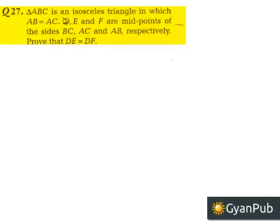Moving on to the 27th question. Triangle ABC is an isosceles triangle in which AB equals AC. D, E, and F are the midpoints of sides BC, AC, and AB respectively. Prove that DE equals DF.